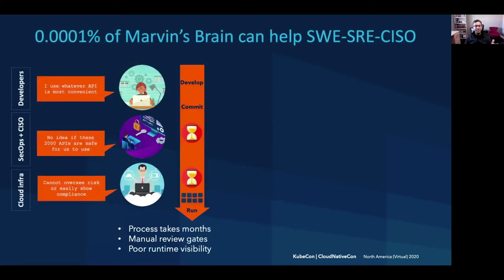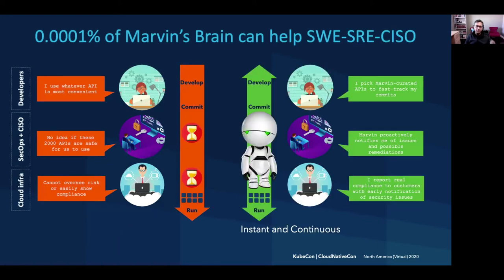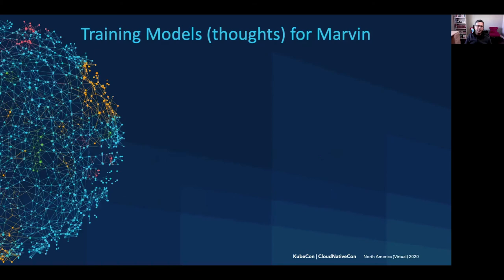So what would the app lifecycle look like if we had this Marvin? The developer would pick Marvin-curated APIs and move fast. Marvin would notify security teams of possible issues and remediations continuously. And cloud platform teams could rest easy knowing they can report compliance in a real-time manner. And how would we train this Marvin? What are its boundary conditions? What are its parameters?